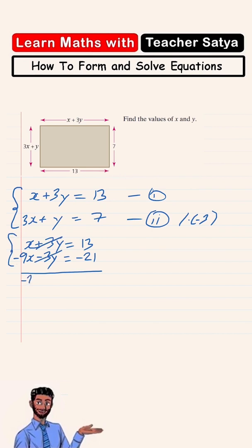Alright guys. It's going to give us negative 8x, and 13 minus 21 is going to give us negative 8. Now if we divide both sides with negative 8, I'll have x equals negative 8 over negative 8, which equals 1.